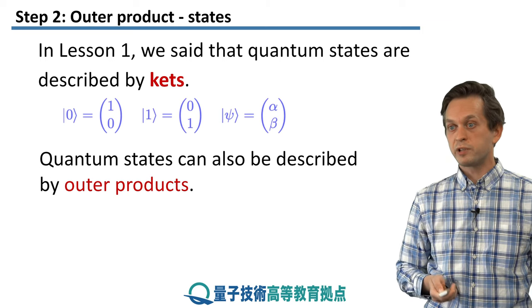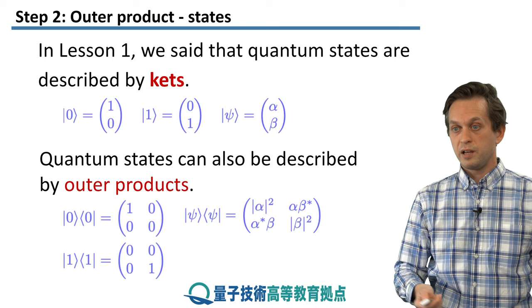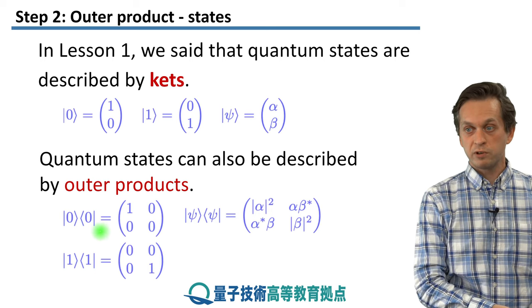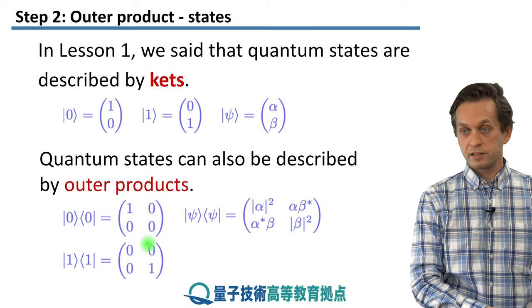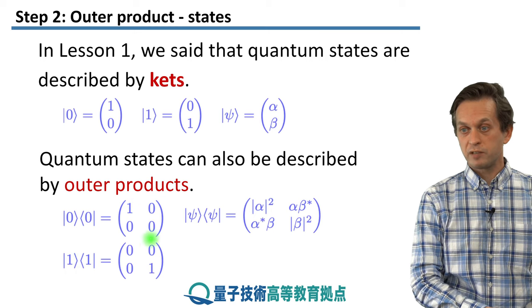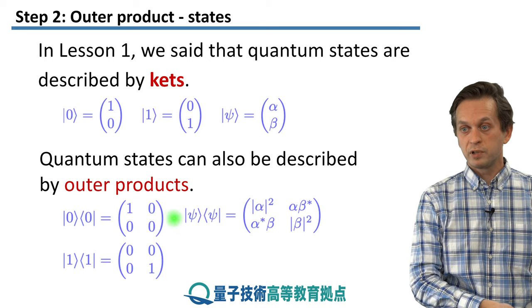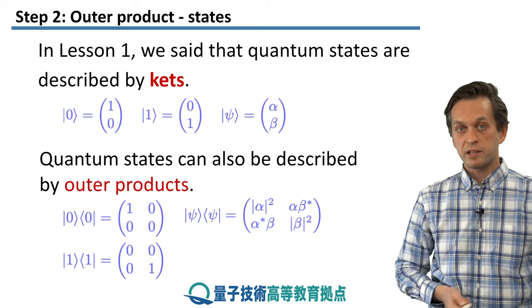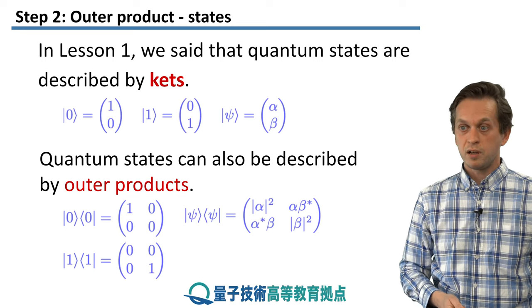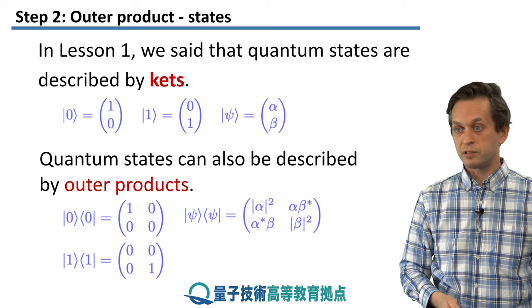On the other hand, we can write down states as outer products as well. In particular, we can write down the outer product of 0, 0 as the following matrix. We can also write the outer product of 1, 1 as the following matrix. And both of them actually represent our states 0 or state 1 just written in matrix form rather than vector form.